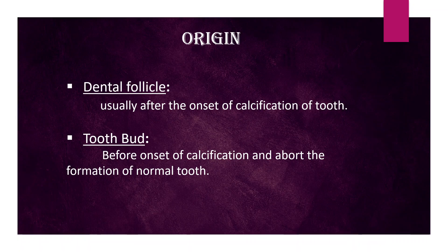Origin: Dental follicle. It develops from the dental follicle, usually after the onset of calcification of the tooth. Tooth bud: It may develop from the tooth bud before onset of calcification and about the formation of a normal tooth.